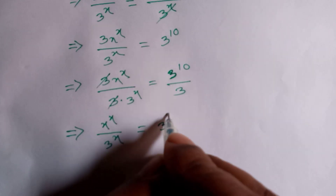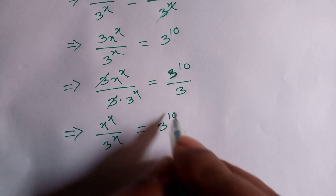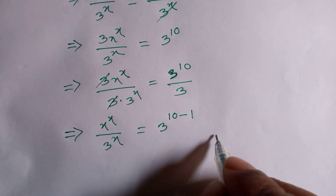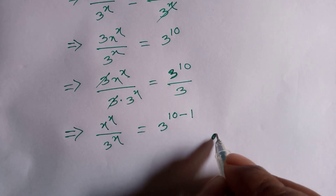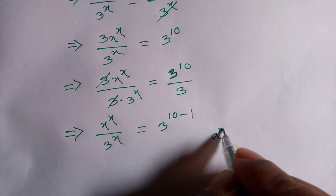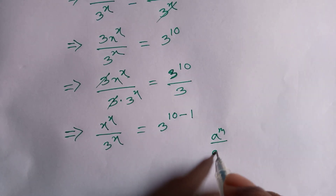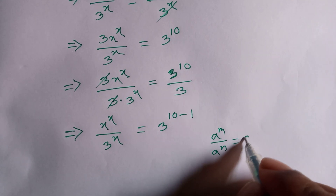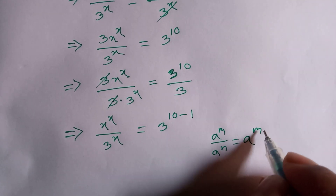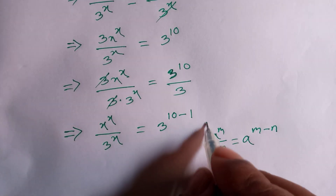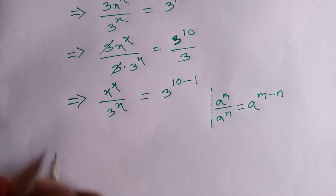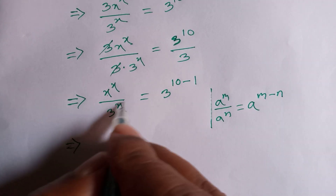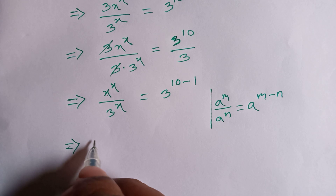...3 to the power 10 minus 1. We use this formula: a to the power m divided by a to the power n is equal to a to the power m minus n. And now x to the power x divided by 3 to the power x can be written as...